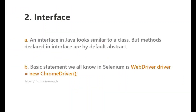The second OOP concept is interface. An interface looks similar to a class but it is a collection of abstract methods. The methods declared in an interface are by default abstract. If you want to achieve full abstraction, you can do so via an interface.